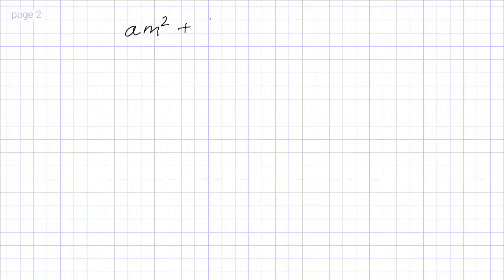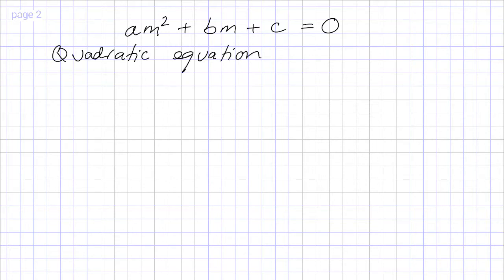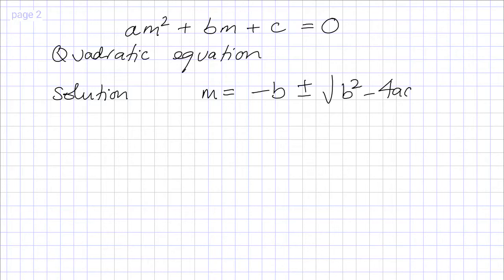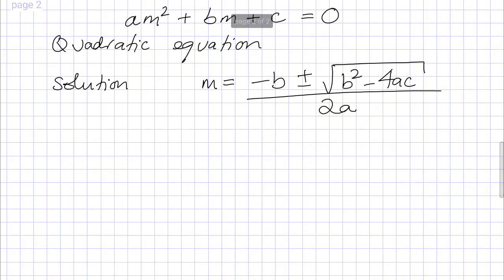Because this whole expression equals zero, and e to the mx is never zero, the factor out the front must equal zero. So we've established that a·m² + b·m + c = 0. This is a quadratic equation, which we can easily solve. The solution is given by the familiar quadratic formula: m equals minus b plus or minus the square root of b squared minus 4ac, all over 2a. If we know the coefficients a, b, and c, we can work out these values of m, and in general there are two solutions.